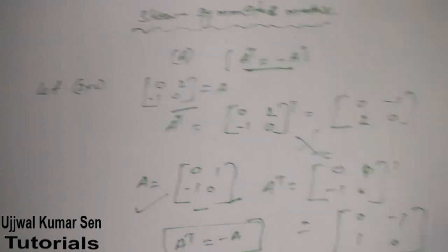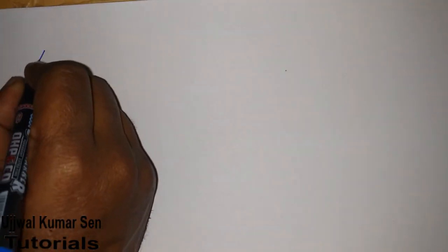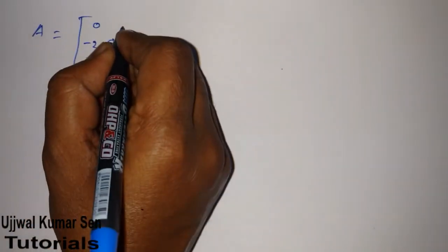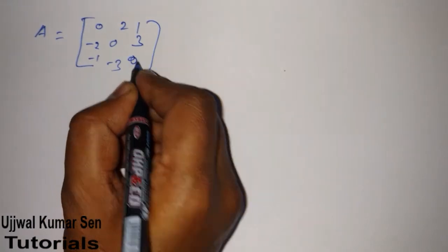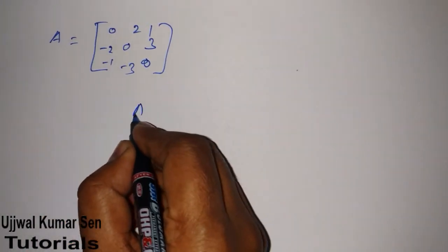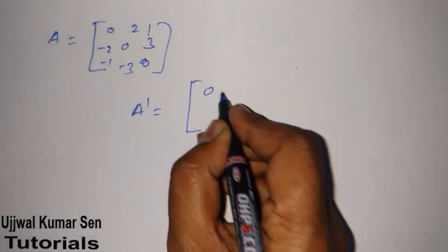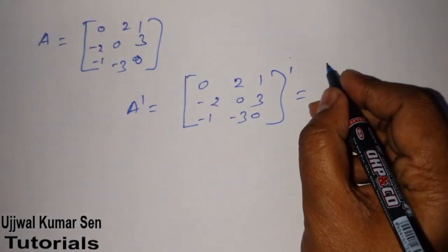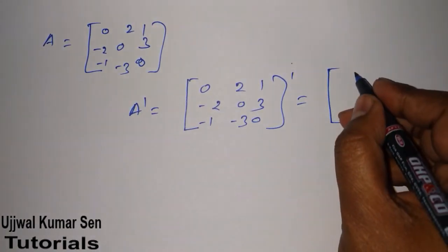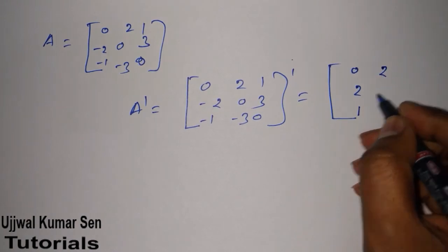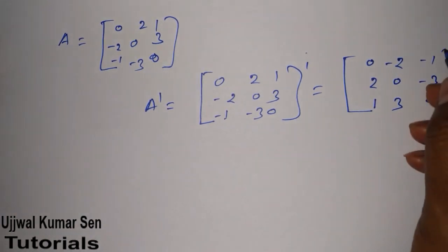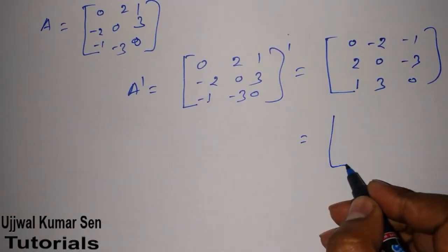Now let me share another example of a skew symmetric matrix in the case of a three by three matrix. Suppose we have A equal to [0, -2, -1; 2, 0, -3; 1, 3, 0]. We have to do the transpose of this matrix. The transpose becomes [0, 2, 1; -2, 0, 3; -1, -3, 0]. Now take the minus sign outside.